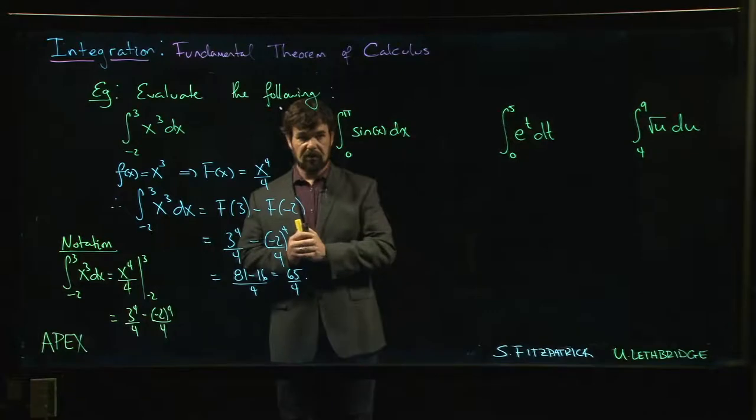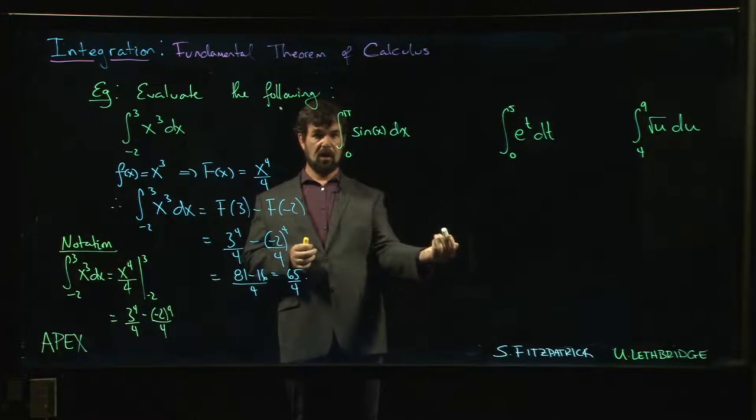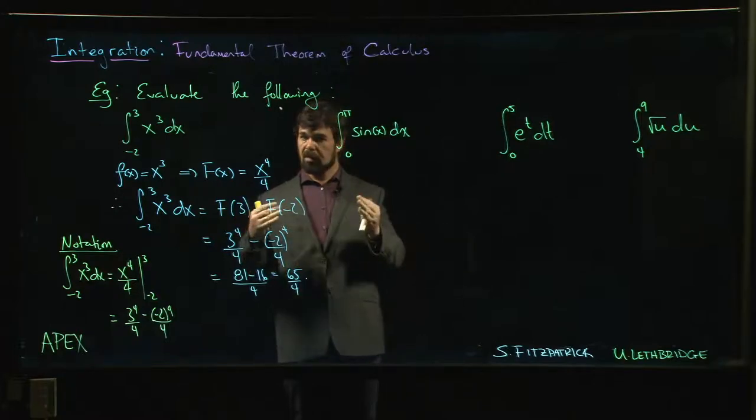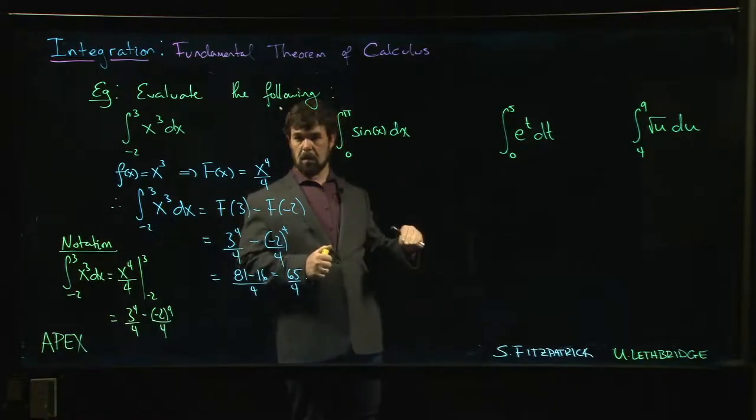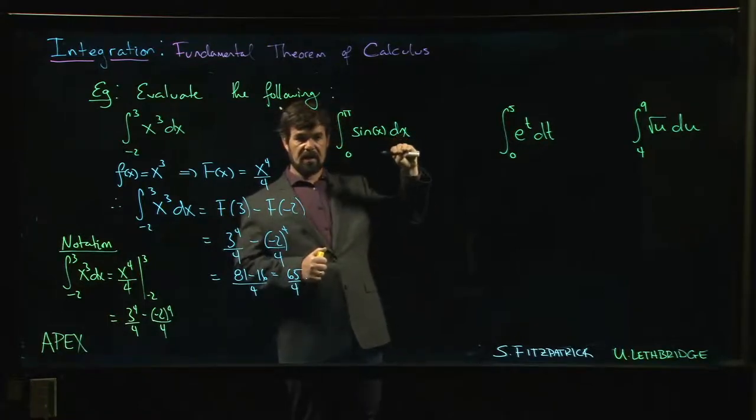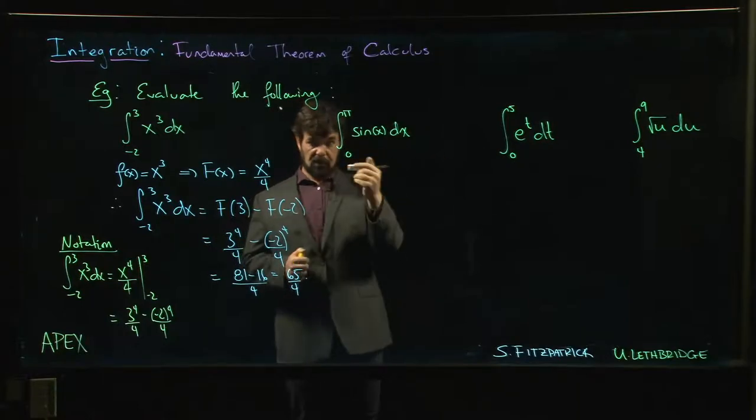Alright, here's our next example: sine X. So the integral of sine, right, the antiderivative for sine. You got to be careful with the pluses and minuses. The derivative of sine is cos, but we want the antiderivative. We need negative cos, right? Because if you took the derivative of negative cos, you get minus minus sine, which gives you back your sine X.